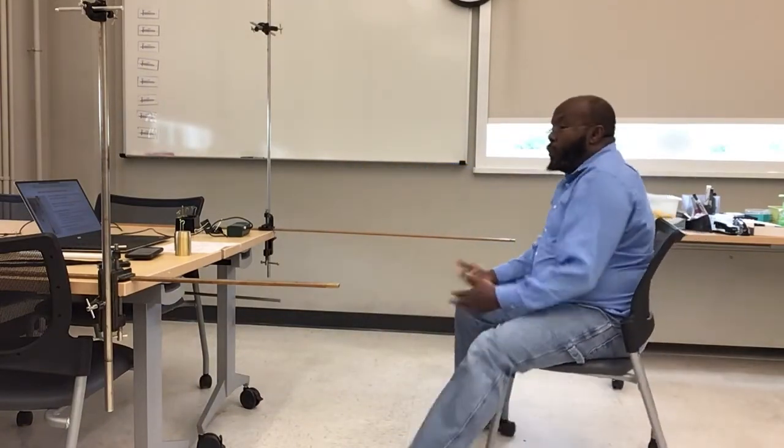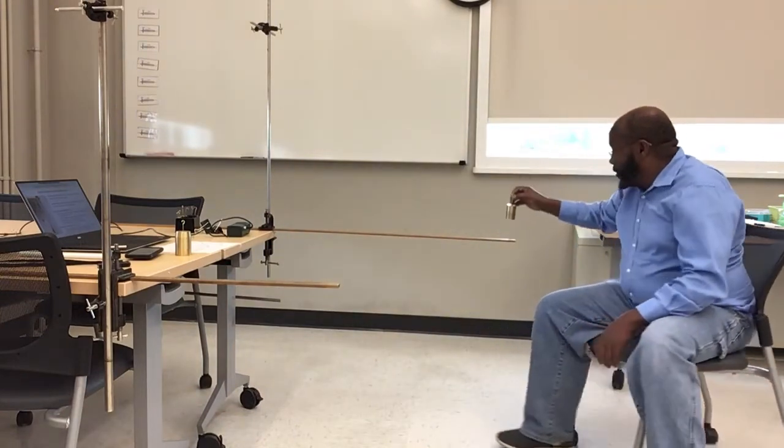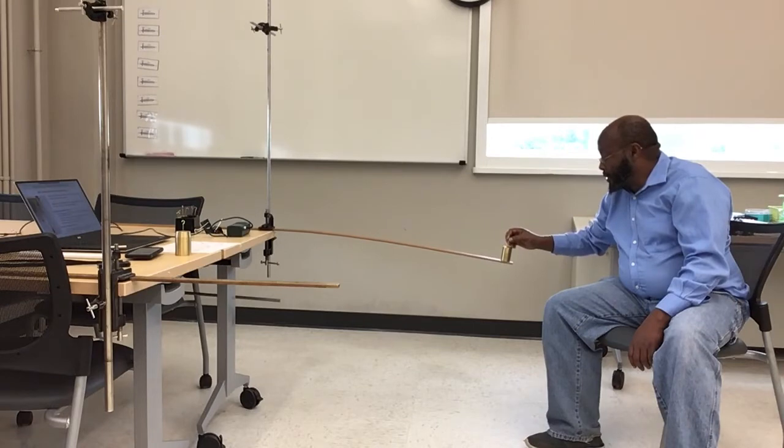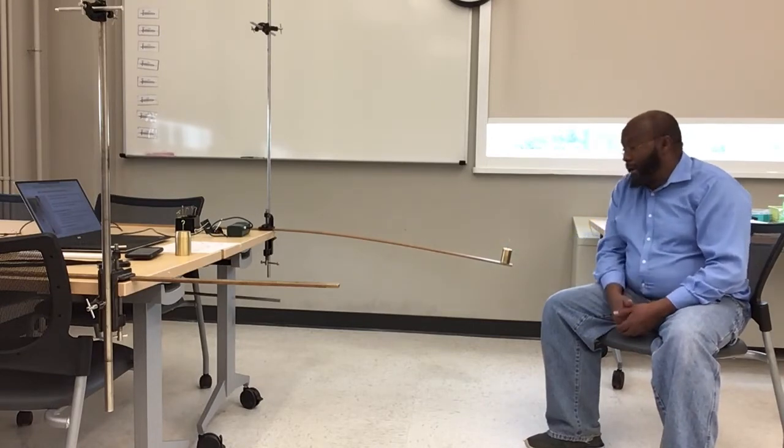First, we want to figure out which meter stick is more stiff and which is less stiff. I'm going to use a 500 gram mass and put it on the shorter one first — watch how much it's displaced from the equilibrium position — and then place it on the longer meter stick and observe the displacement.